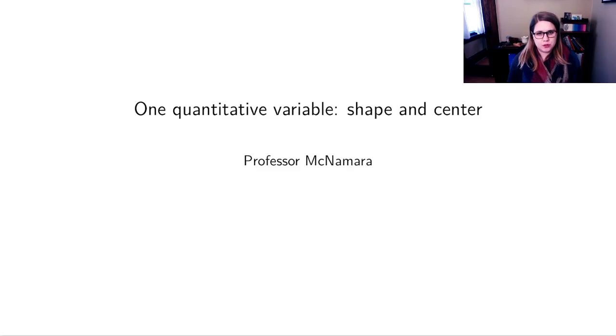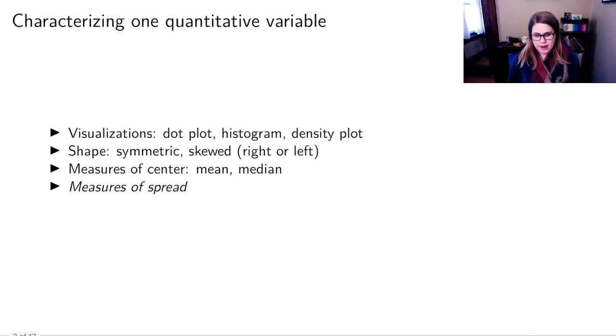We've talked about how you could do exploratory data analysis if you had one categorical variable. And now we're going to start thinking about how that changes if you have one quantitative or numeric variable. If we're trying to characterize one quantitative variable, we might want to do a data visualization like a dot plot, a histogram, a density plot, or we might want to say something about the center, shape, and spread of the distribution. So we're going to talk about some measures of center, which are mean and median. We're going to talk about some ways to describe the shape of a distribution. And then in the next section, we'll talk about measures of spread.